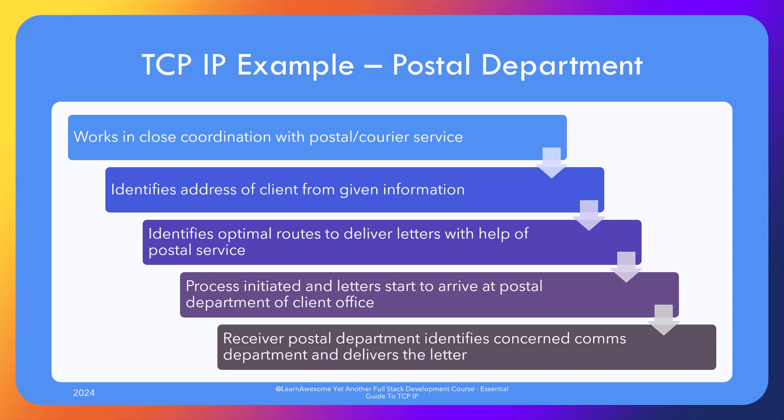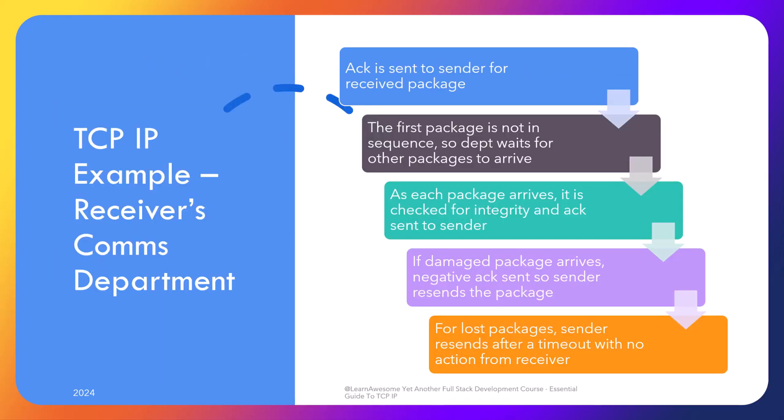The client's postal department identifies which communication department team is handling such cases and delivers them to the concerned team. The comms team on the receiver end realizes that the first letter received is not the first one in the sequence, so they send a received acknowledgement for the received packet and wait for the others. The packets keep arriving and are acknowledged, but there is an issue with two packets — one is wet, the samples are unreadable, and the checksum can't be performed. In other words, the package is damaged, and the other packet simply never got delivered.